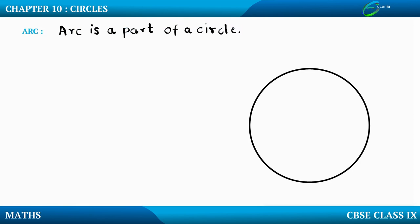To get a part of a circle, I need at least two points on the circle. So let me consider two points on the circle — suppose this is point A and this is point B. These two points on the circle will divide the circle into parts. From A to B, I have this part over here, so I can call this arc A, B.